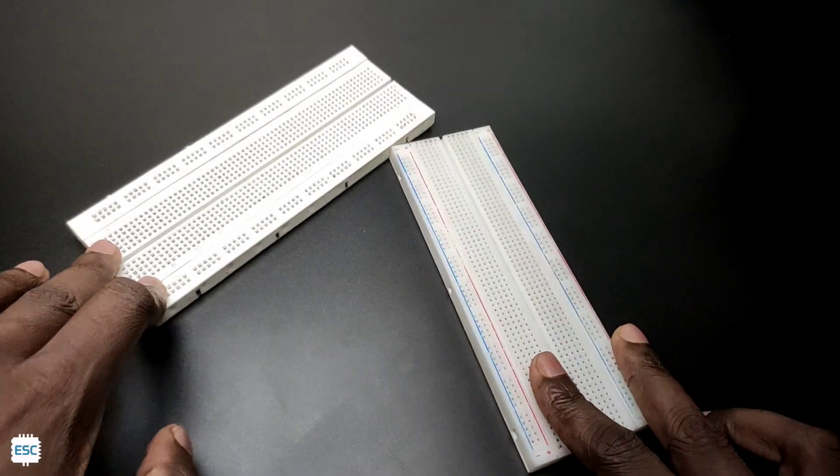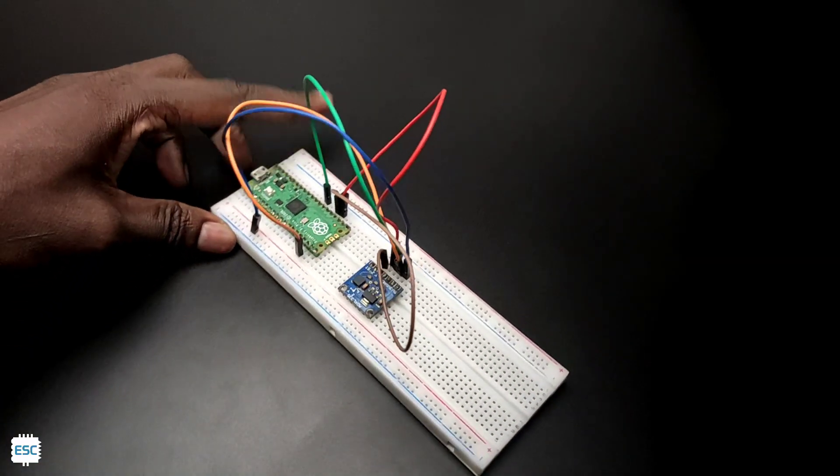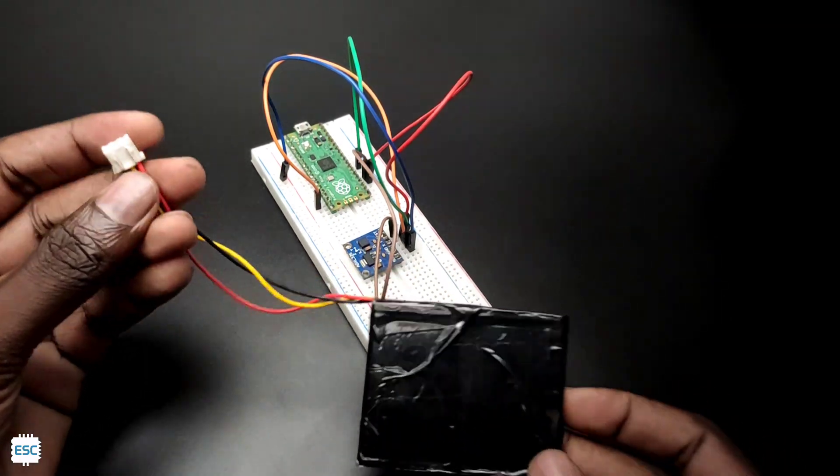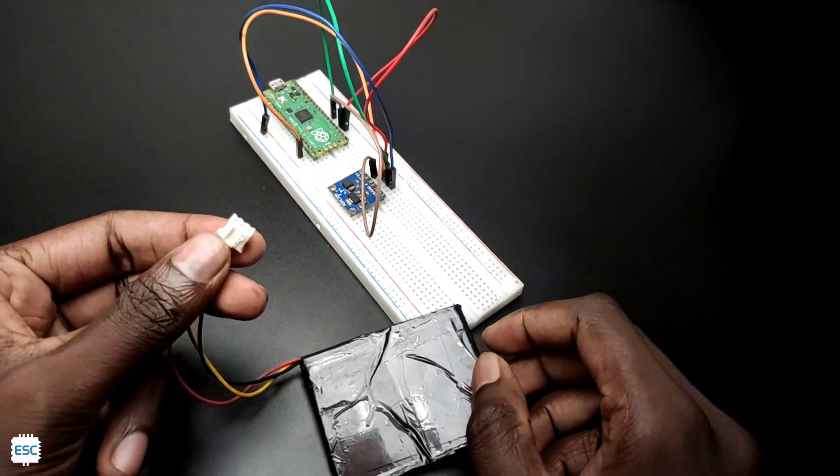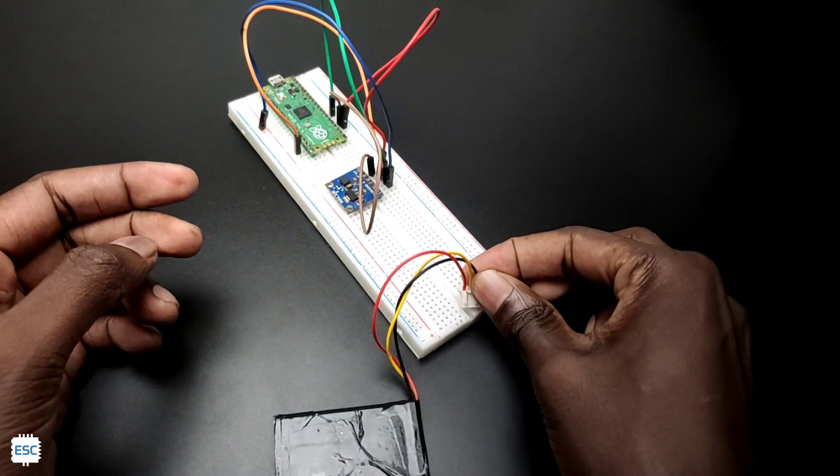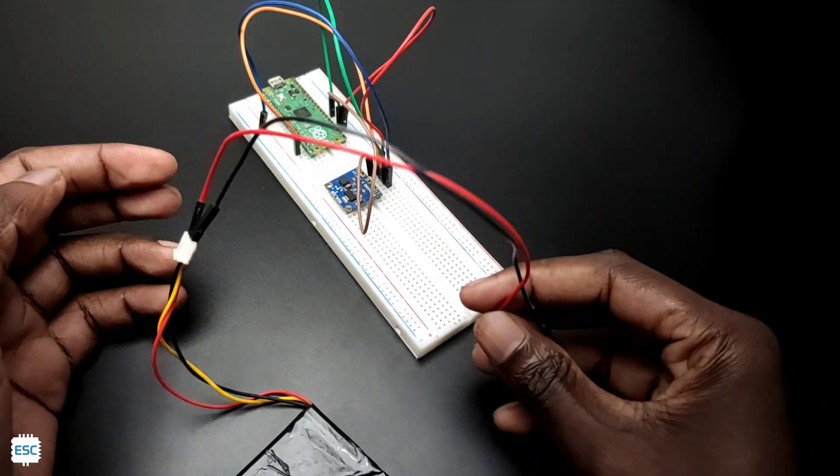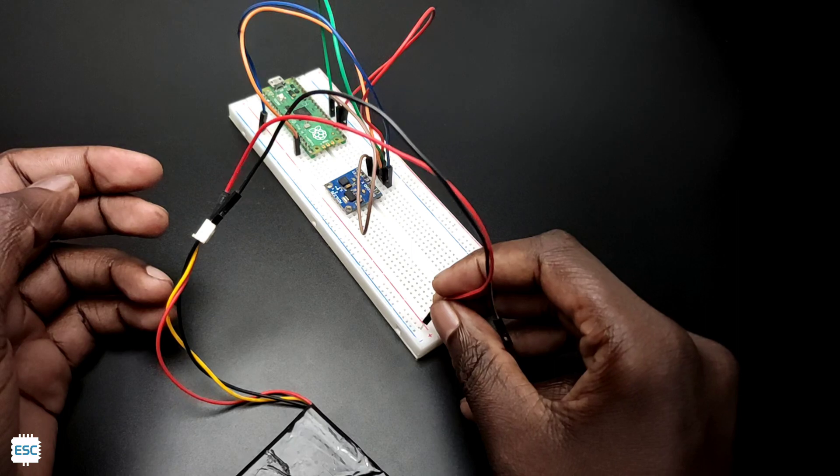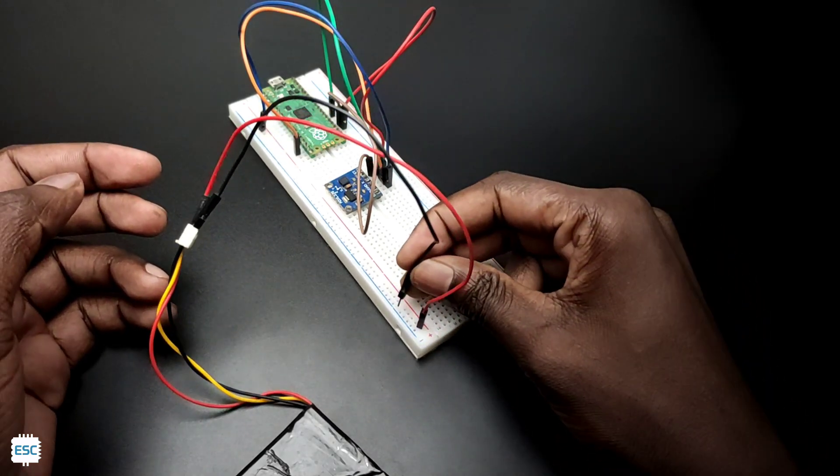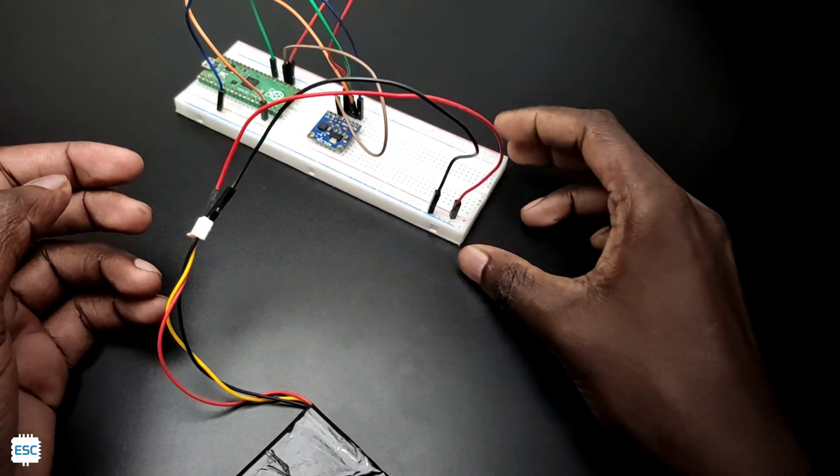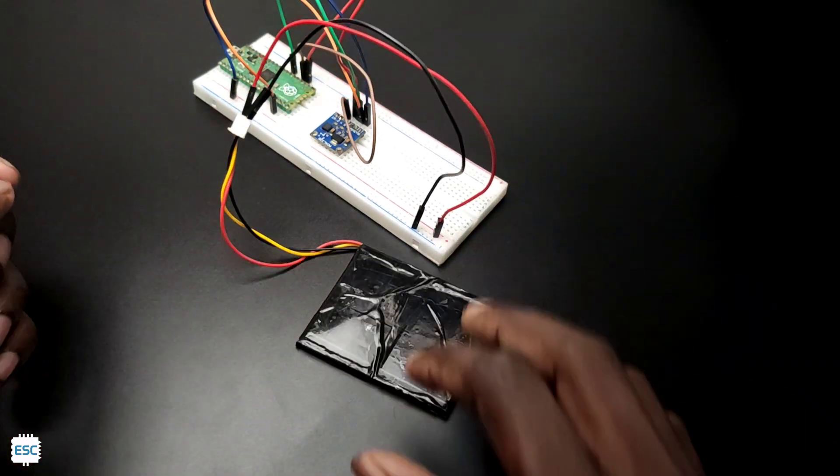Hey there, all makers including me use breadboards for testing their projects. To power these circuits I usually use this type of lithium-ion battery, but we can't directly connect the battery to the breadboard. Also if I want 5 volts or 3.3 volts then I have to use an extra 5 volt or 3.3 volt regulator. To solve these problems I decided to build a breadboard power supply.